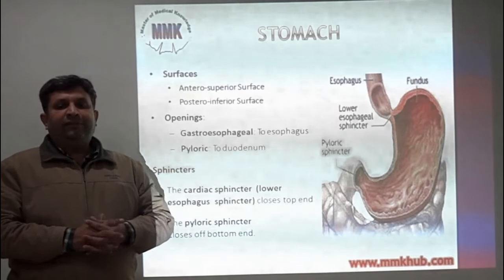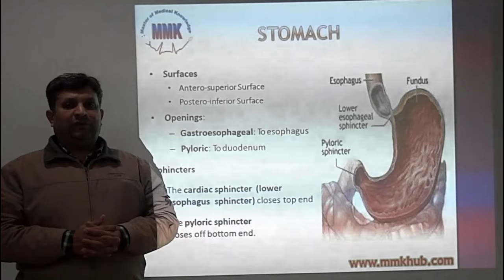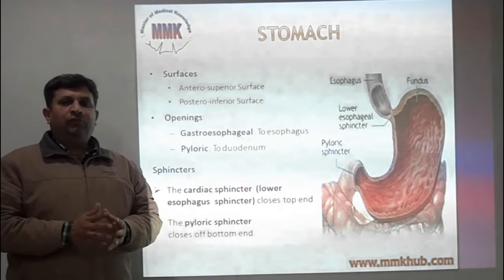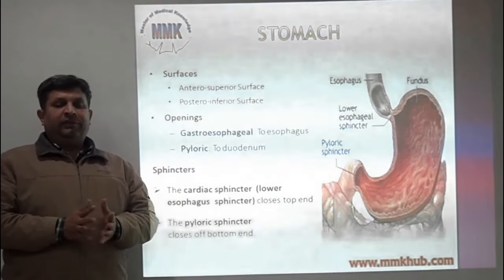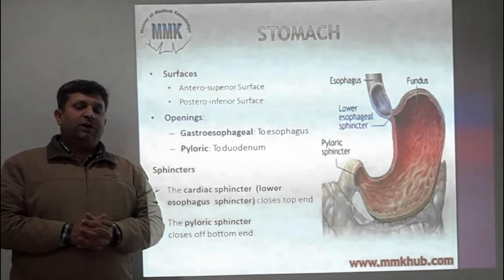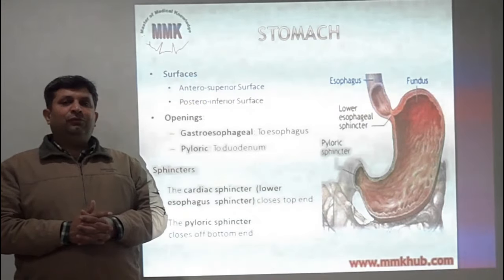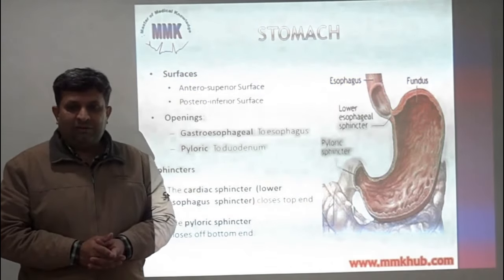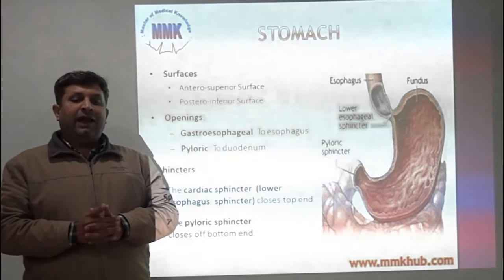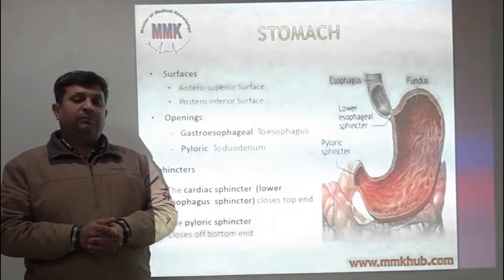As far as surfaces of the stomach are concerned, we divide the stomach into two surfaces: anterior superior surface and posterior inferior surface. There are two openings into the stomach. One opening is proximally at the gastroesophageal level, which connects the esophagus with the stomach, and the second opening is at the distal end at the pyloric level, which connects the stomach to the duodenum.